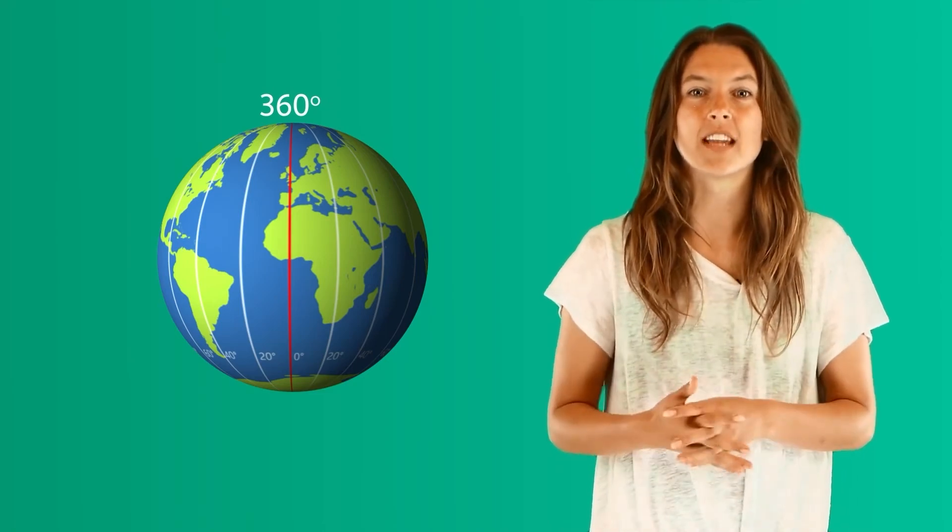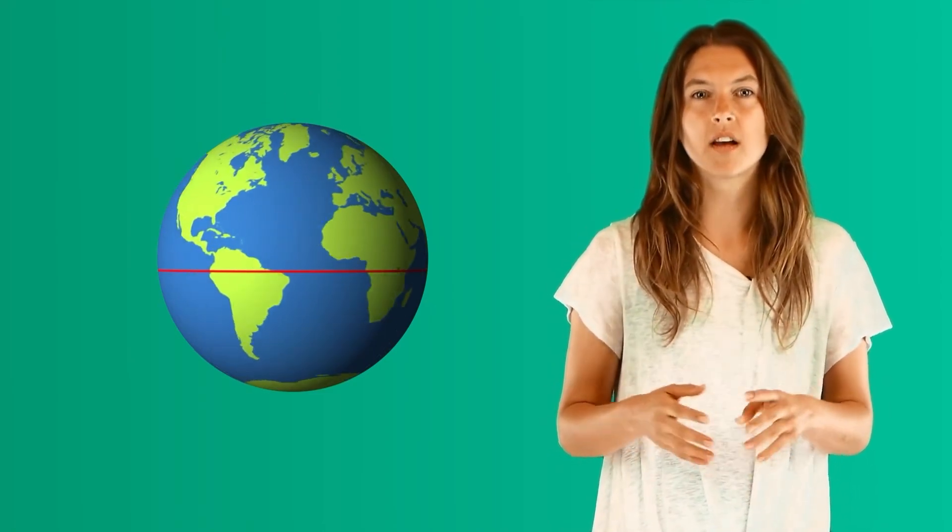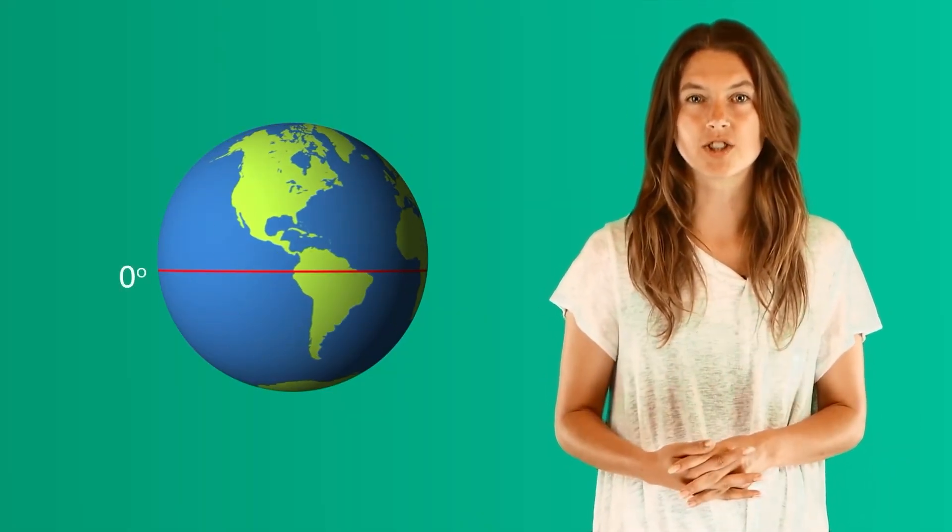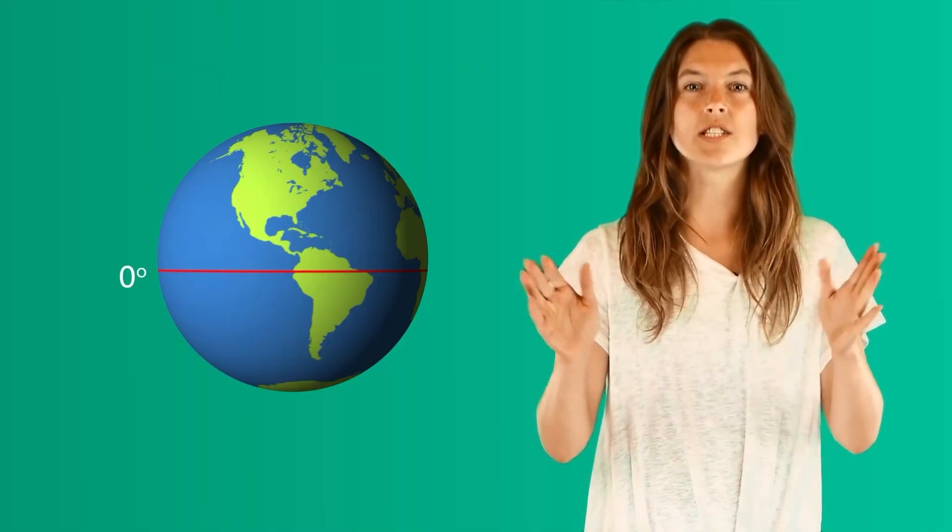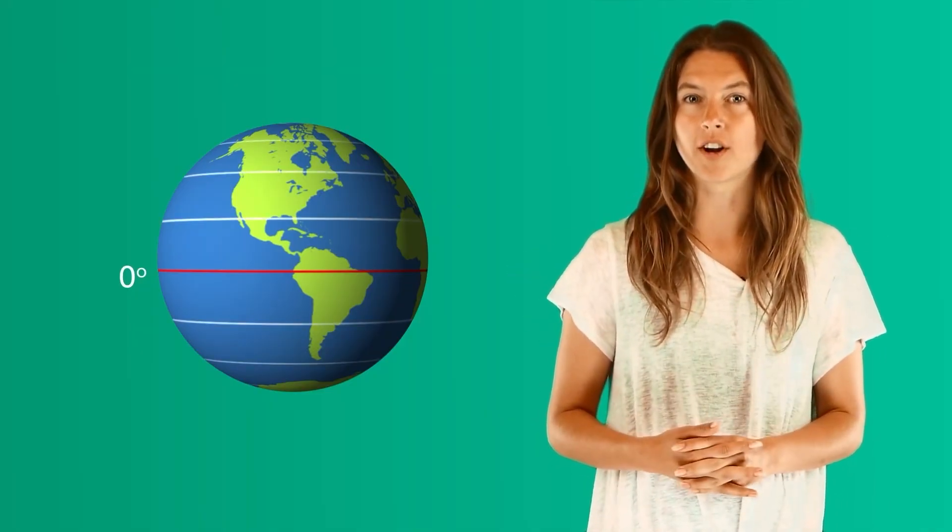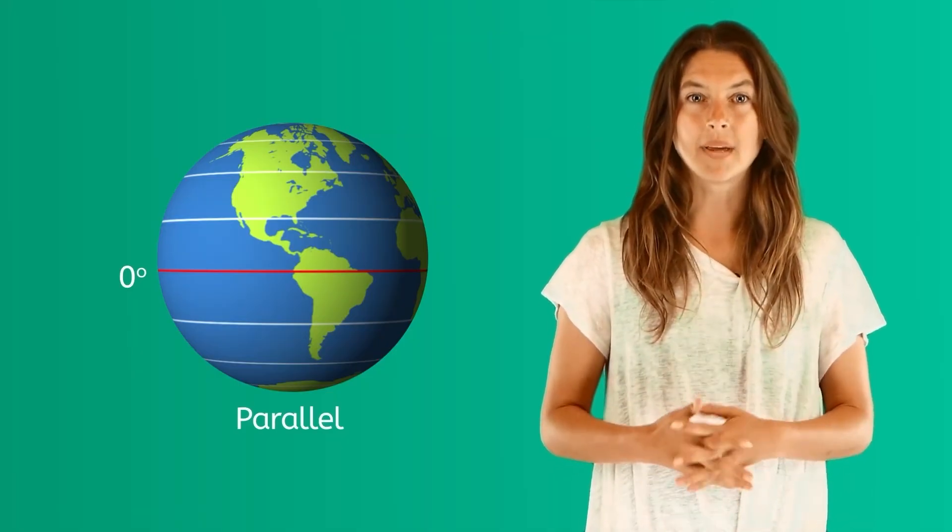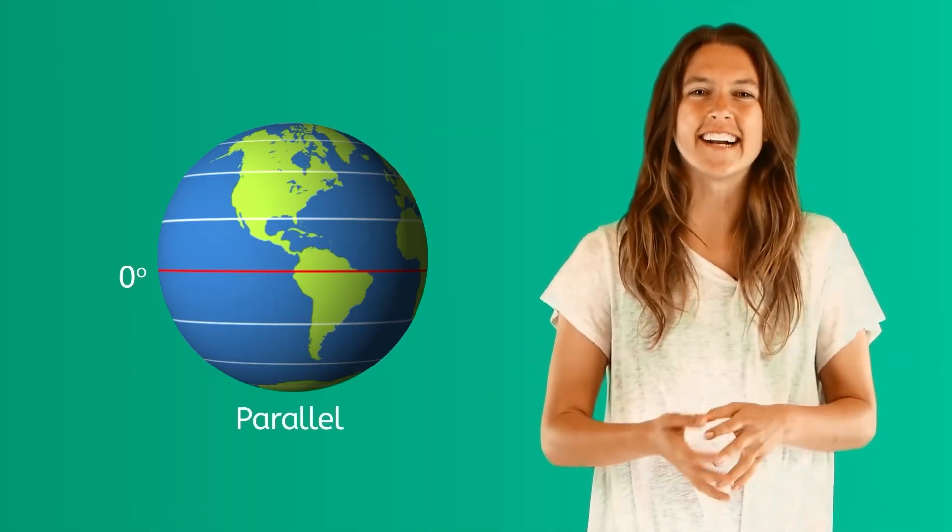The same is true for lines of latitude. The Earth's equator horizontally runs from east to west around the Earth. It measures zero degrees latitude. Each of the imaginary lines going around the Earth in the same direction as the equator is called a parallel because they are parallel to the equator.